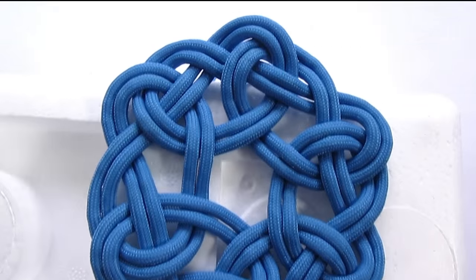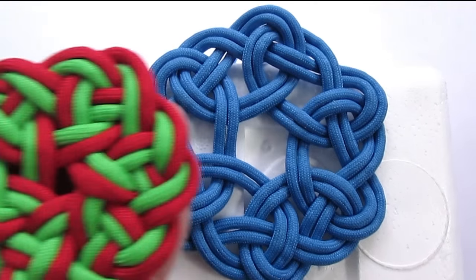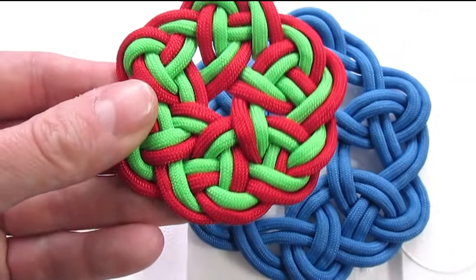So here you can see a basic doubled Kringle mat. And here is a two color tighter version that can be used as a coaster.